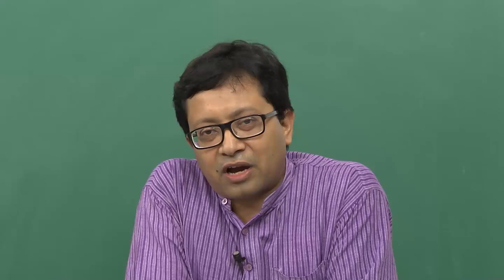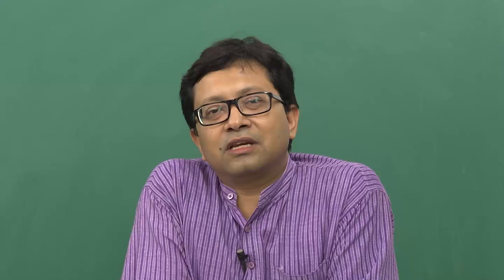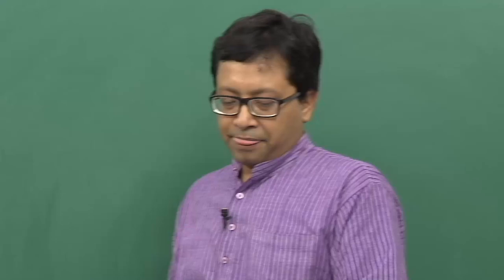As the prices or quantities of the financial products change, sensitive analysis helps you balance your portfolio, balance your risk, and balance your returns. Marginal revenues or return for any decision on financial instruments is basically the change in the revenue associated with the unit change in output. For example, if your total output depending on the price change in the overall market falls by 100 rupees or increases by 200 rupees, based on that you want to find out what readjustments to make in your portfolio. We will see that marginal revenues is zero at the quantity that generates maximum total revenue when considering maximization or minimization.